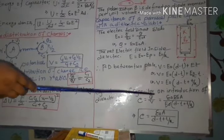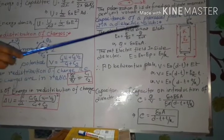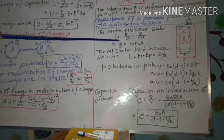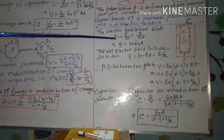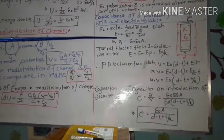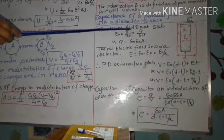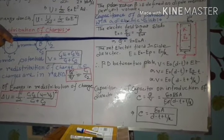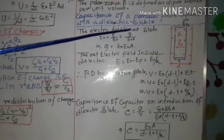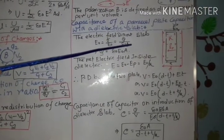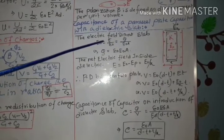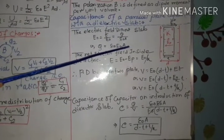To find the charge, we take the expression for electric field without the slab: E naught equals sigma by epsilon naught. Since sigma equals Q by A, we get E naught equals Q by epsilon naught A. Therefore, Q equals epsilon naught E naught into A. This is the expression for Q.